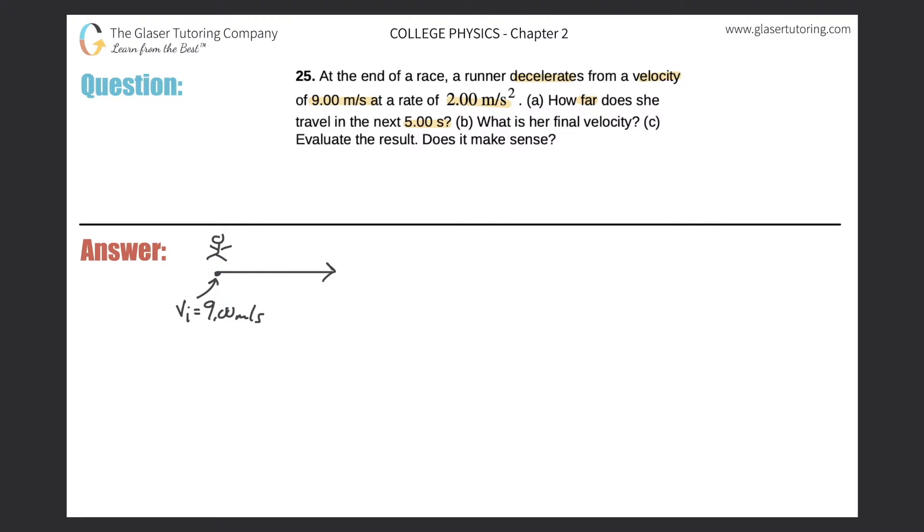And the acceleration, the deceleration in this case, but the acceleration will be negative 2.00 meters per second squared. Now it wants to know how far does the runner travel? So looks like we're looking for this particular displacement, right? So that's my variable.